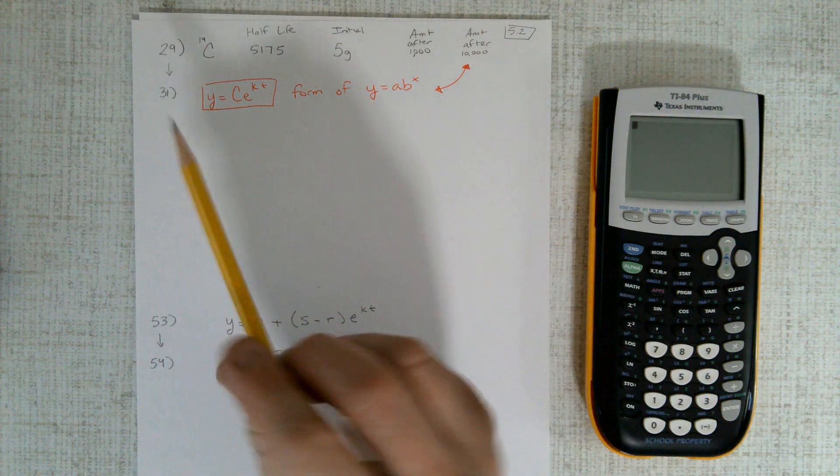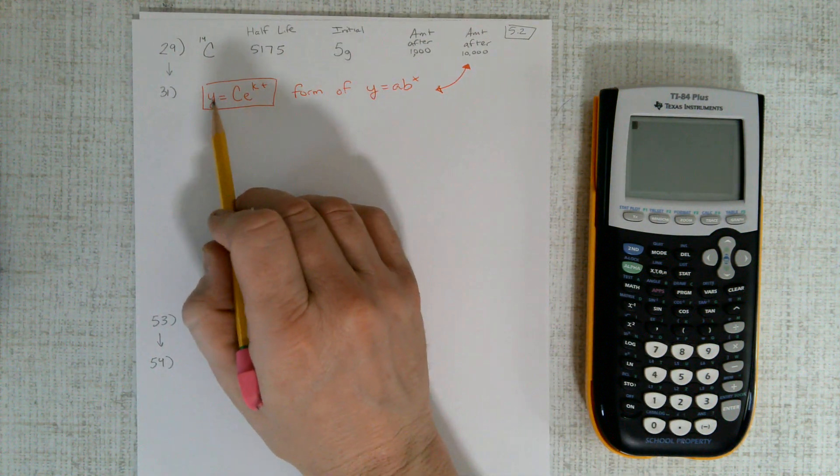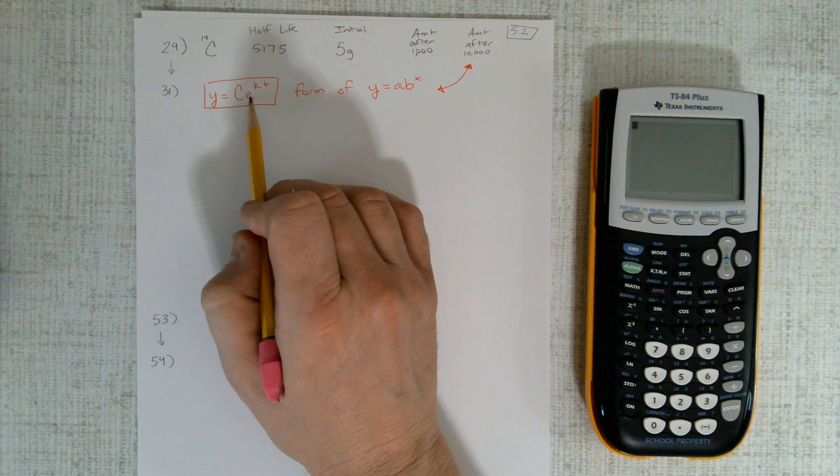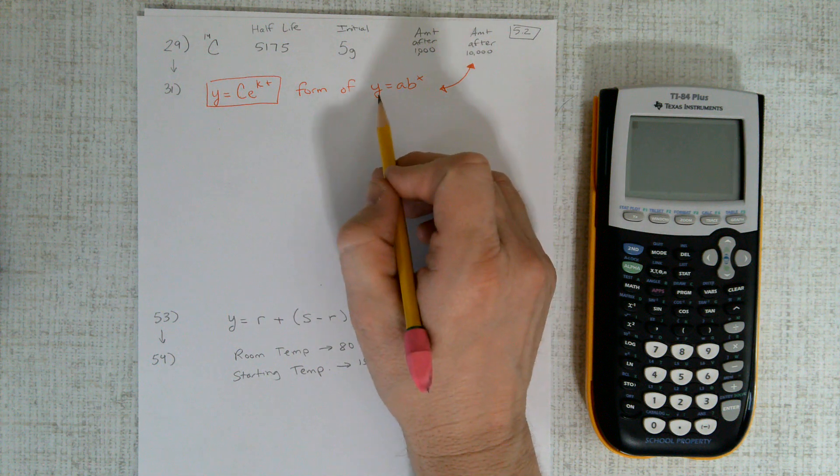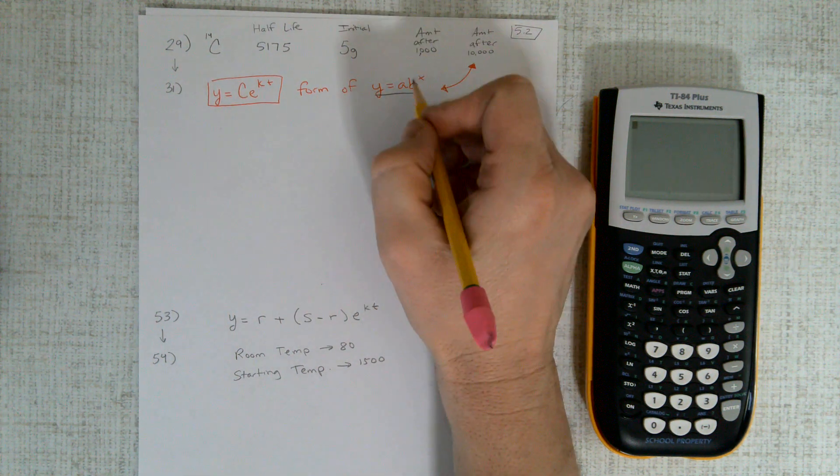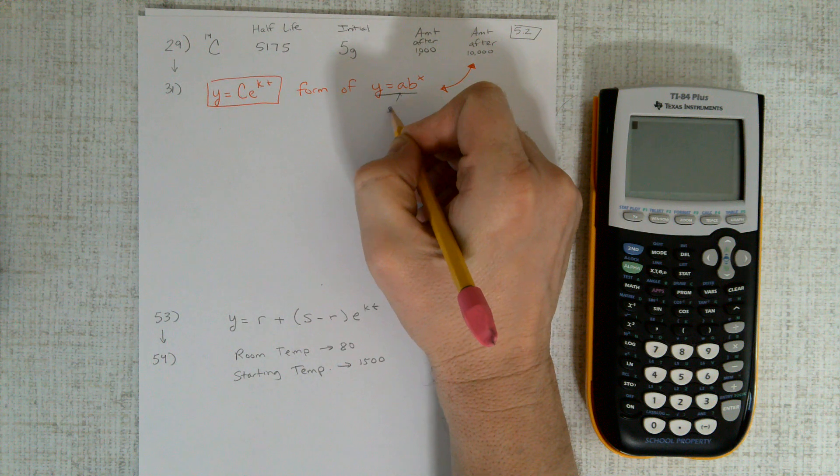All of these questions are about one formula this week, and it's y equals c times e raised to the kt power, which is just a version of this exponential equation.